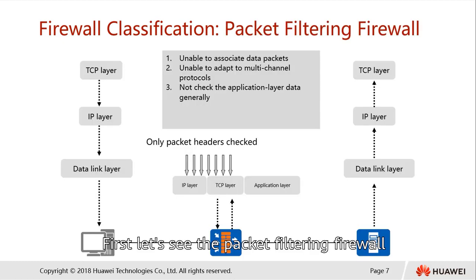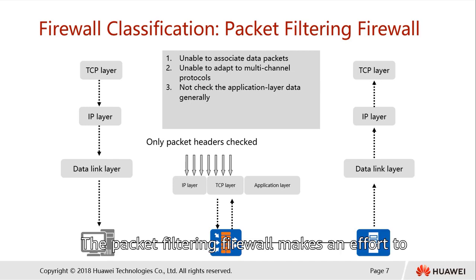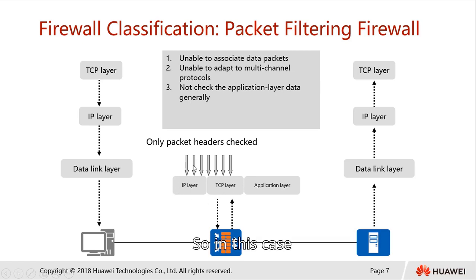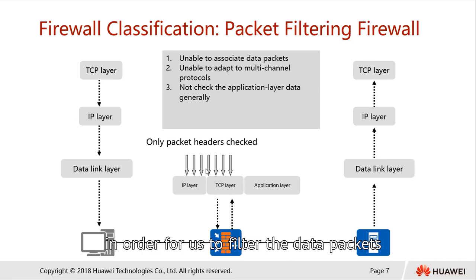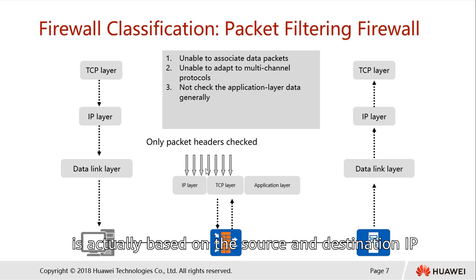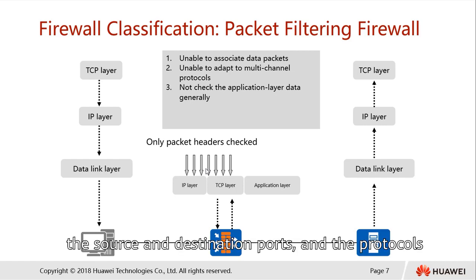The packet filtering firewall works by checking packets one by one. In every packet, we have an IP header as well as a TCP header, and only the packet headers are checked. This uses an ACL — access control list — to filter data packets. The parameters we can filter are based on the source and destination IP, source and destination port, as well as protocol.